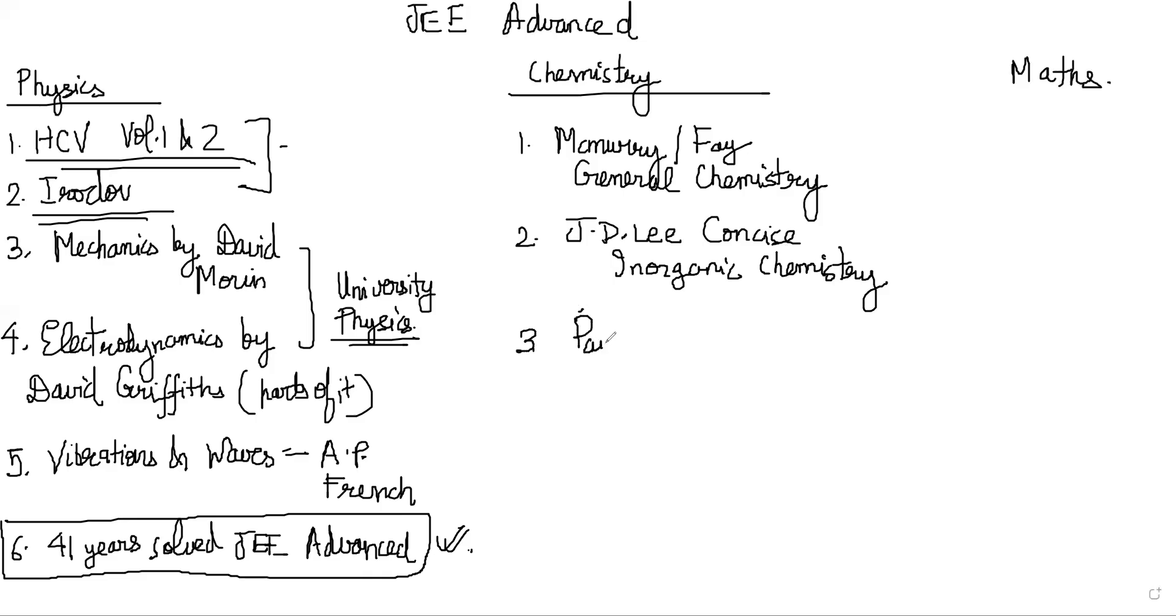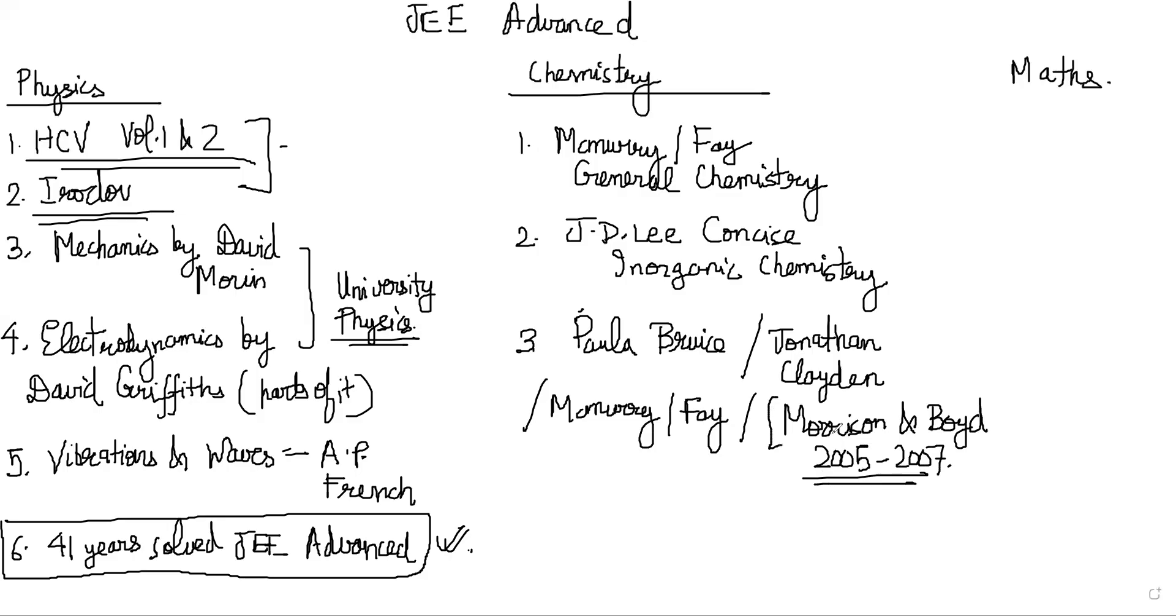Then for Organic, either use Paula Bruice or Jonathan Clayden. Actually there are several other good options also. But Paula Bruice, Jonathan Clayden are fine. You could also use McMurray Fay again if you like that guy's writing. Or you could also use Morrison and Boyd. Morrison and Boyd is what I studied way back in 2007, 2005 to 2007. That was when I was preparing and this is the book that I followed. But these are newer and fresher and so you might like to use those. So that is also good.